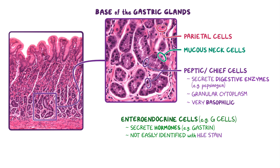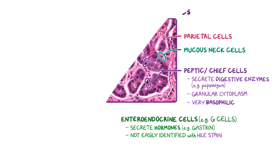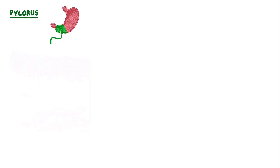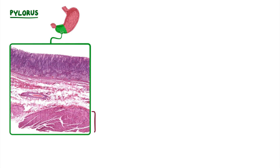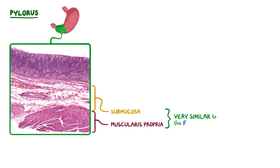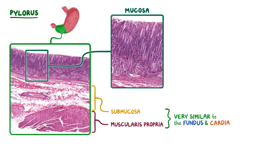Moving on to the last and most distal region of the stomach — the pylorus. Although the serosa can't be seen in this image, the serosa, muscularis propria, and submucosa are all very similar to the fundus and cardia, but the mucosa of the pylorus does have quite a few unique characteristics.